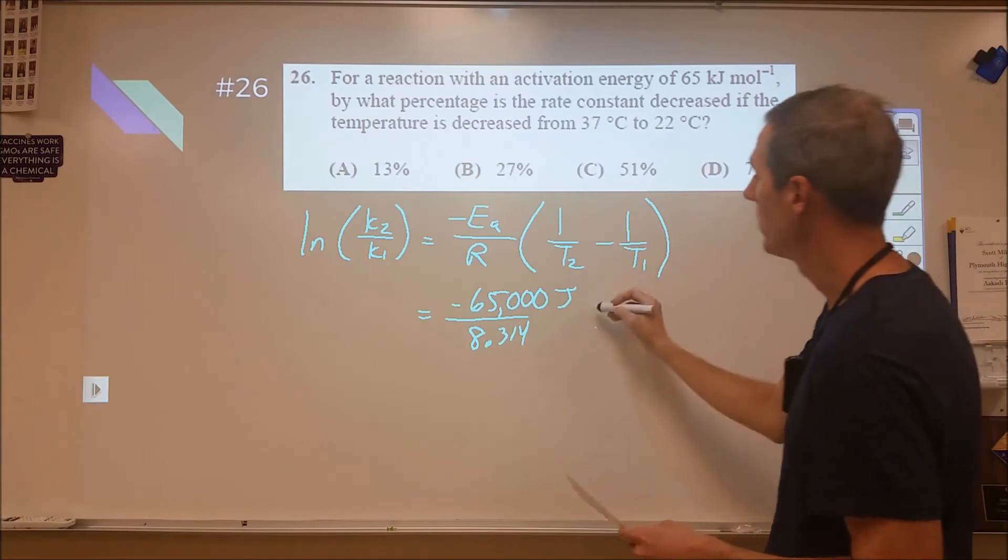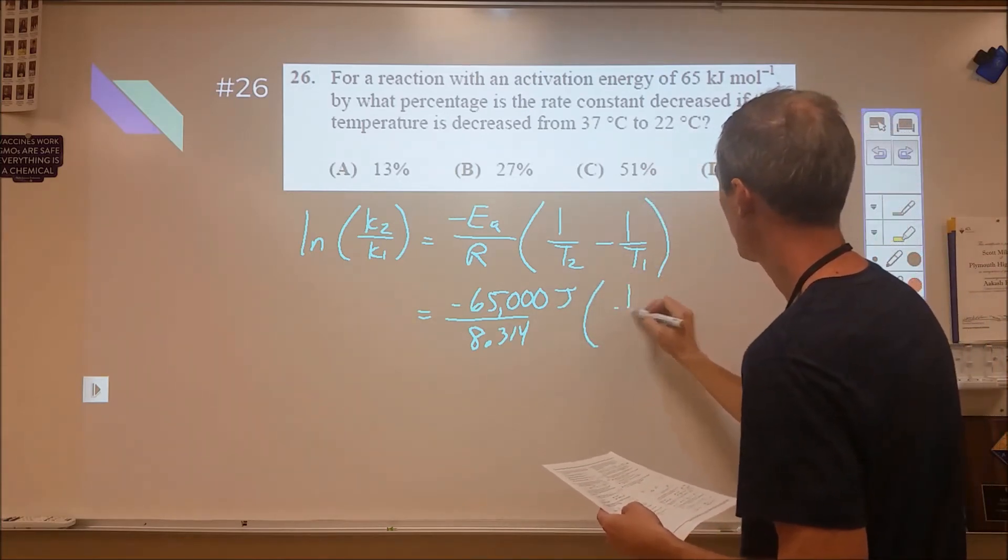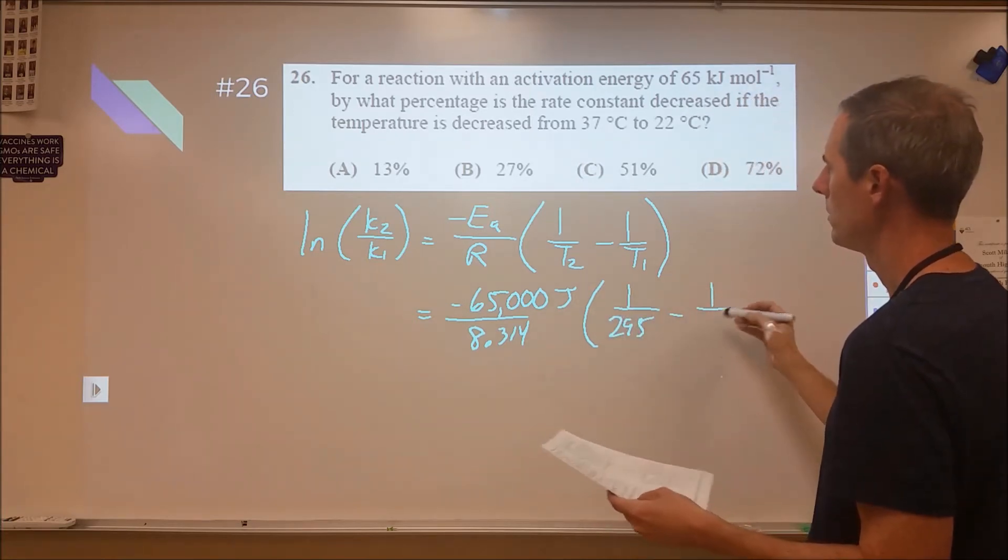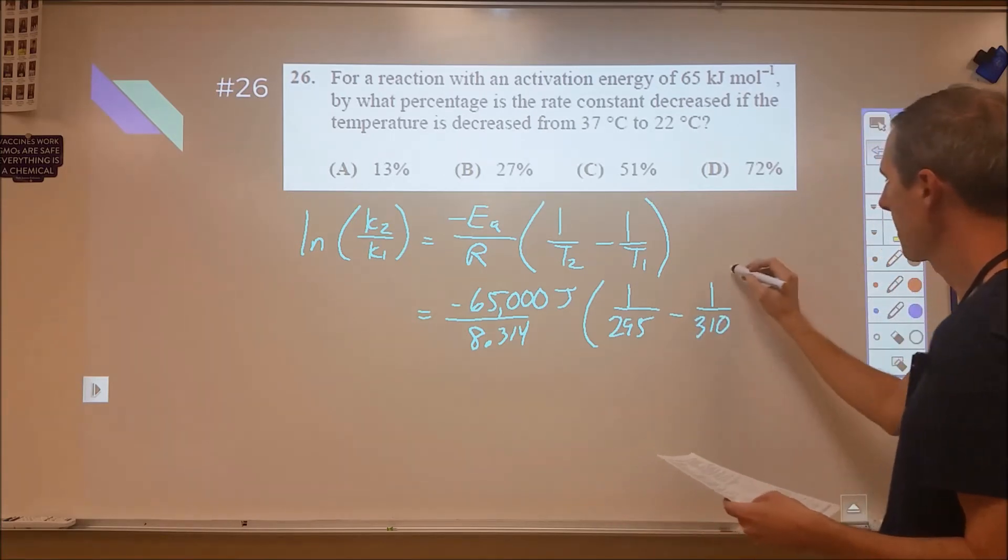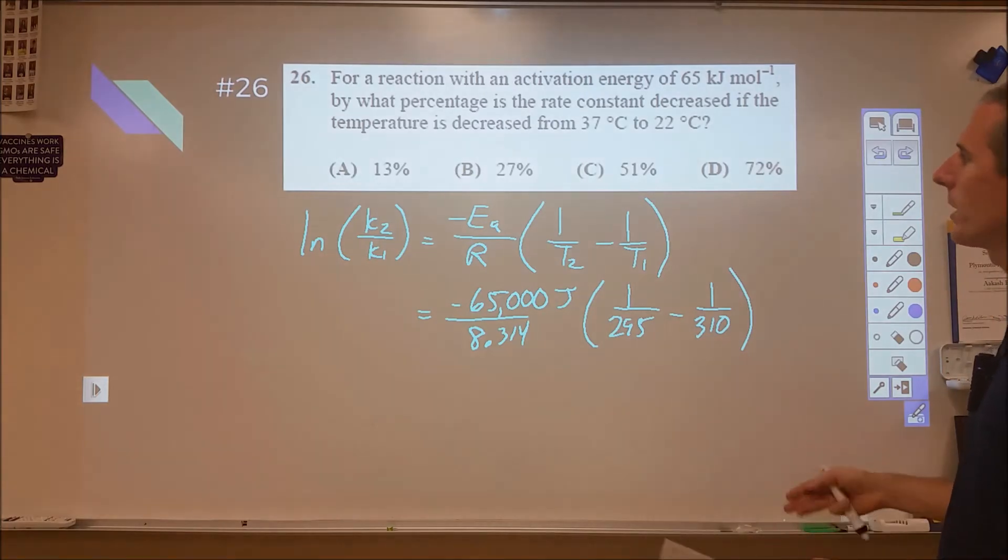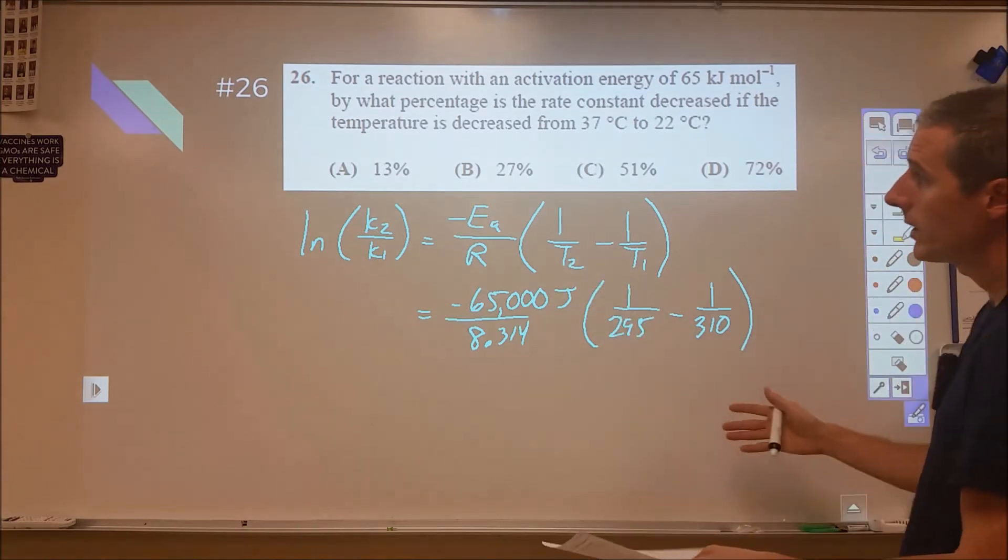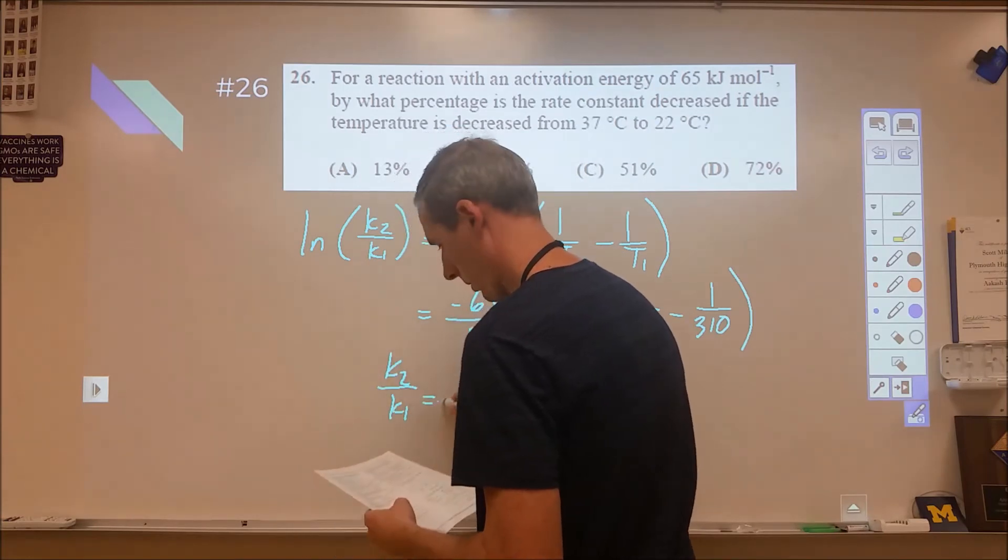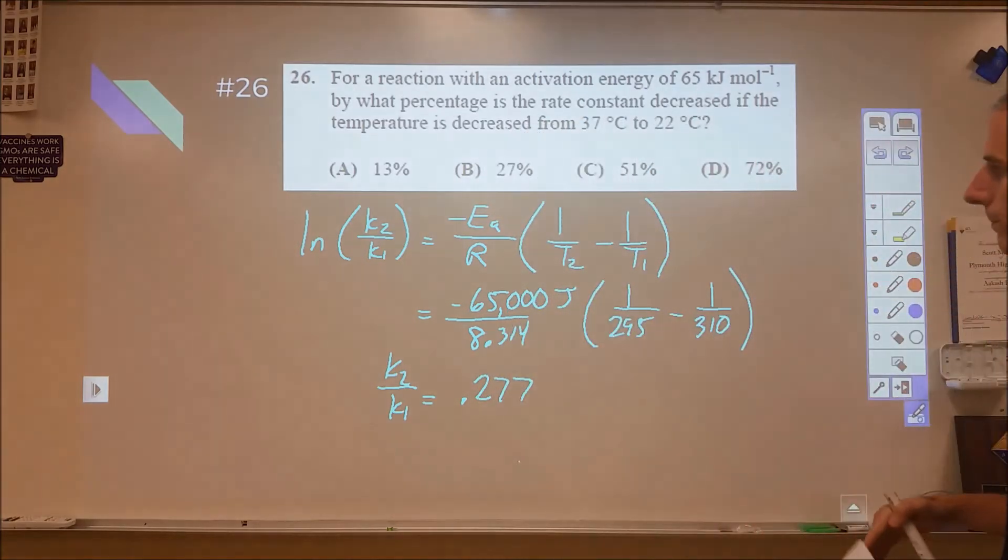I'm going to plug in my two temperatures, but those need to both be in Kelvins. So we're looking at one over 295 minus one over 310. If you end up with a flip sign somewhere, you can just kind of factor that out when you get to the end. I never remember which one's T2 or T1. So at the end of the day though, what you end up with is K2 over K1 equals 0.277 when you do all of your algebra.